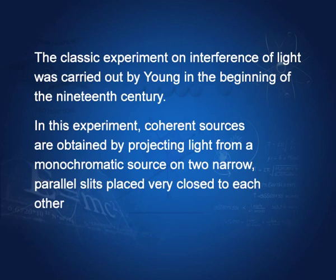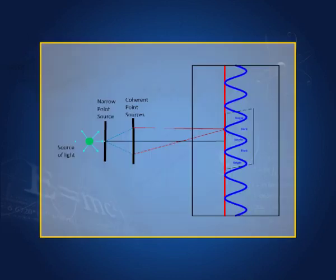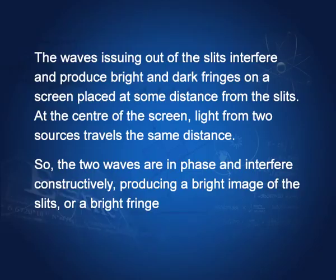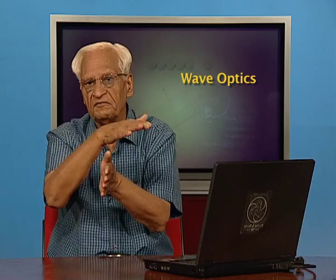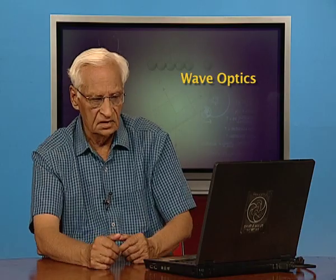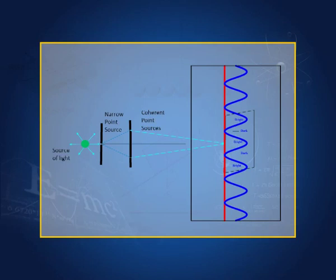The classic experiment on interference of light was carried out by Young in the beginning of the 19th century. In this experiment, coherent sources are obtained by projecting light from a monochromatic source onto two narrow parallel slits. The waves issuing out of the slits interfere and produce bright and dark fringes — wherever there is constructive interference, we have a bright fringe; wherever there is destructive interference, we have a dark fringe. So we have a pattern of dark and bright fringes on the screen.